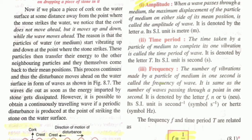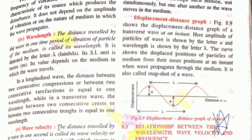Third is frequency: the number of vibrations made by a particle of the medium in one second is called frequency. Its SI unit is hertz or per second. Fourth is wavelength: in just one time period, the distance travelled by the wave is called wavelength. It is denoted by lambda and its SI unit is meter.